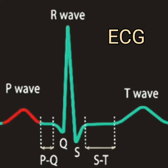The waves associated with the electrical activity of the various parts of the heart tissue during each cardiac cycle are represented by letters P, Q, R, S, T and U. The P wave is the first wave of ECG, of duration 0.1 second, directed upwards, rounded or pointed.